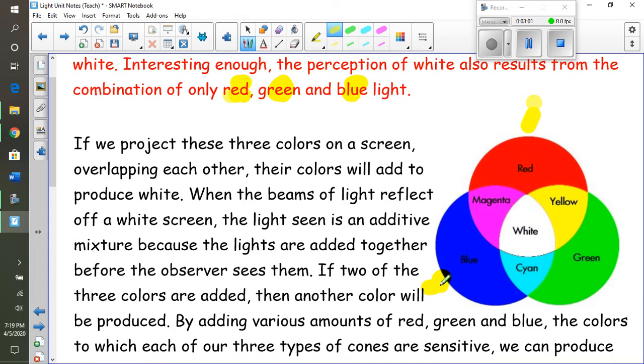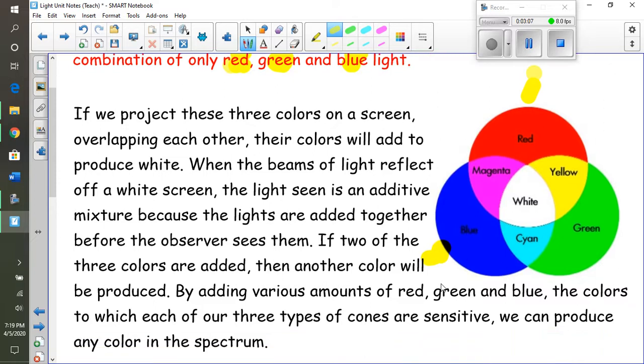So when the beams of light reflect off of this white screen, the lights are seen as an additive mixture. The lights are added together before the observer sees them. So if two of the three colors are added, then another color will be produced. By adding various amounts of red, green, and blue - the colors to which your three types of cones are sensitive - we can produce any color of the spectrum.